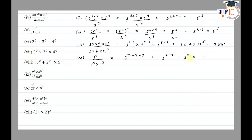Any number's value with exponent 0 is 1. The sixth part is: 2 raised to the power 0, plus 3 raised to the power 0, plus 4 raised to the power 0. Since any number with exponent 0 equals 1, this becomes 1 plus 1 plus 1, which is equal to 3.